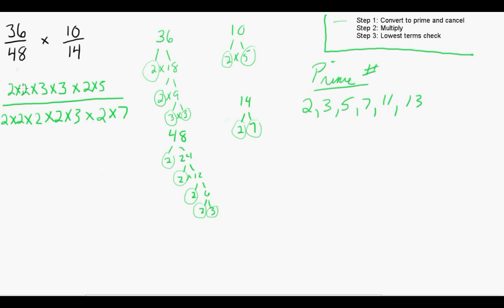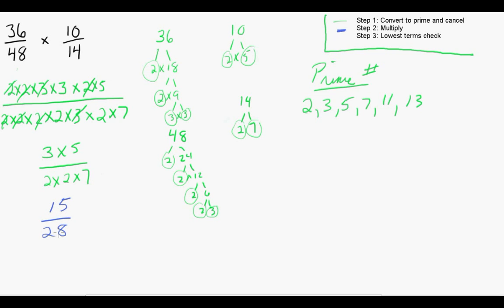Now we're going to cancel. We have a 2 on the top and a 2 on the bottom, a 2 on the top and a 2 on the bottom, a 3 on the top and a 3 on the bottom, and one more 2. So what we're left with is 3 times 5 on top, and 2 times 2 times 7 on the bottom. Multiplying: 3 times 5 gives us 15, and 2 times 2 is 4, times 7 is 28. So we're left with 15 over 28.